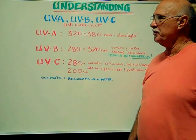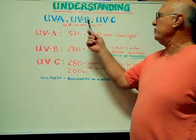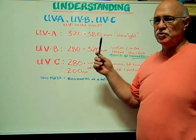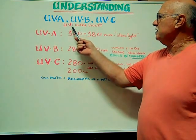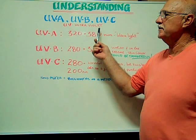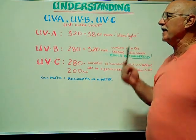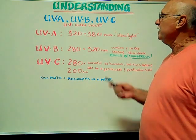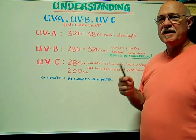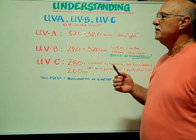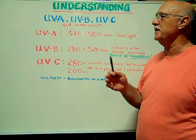Here at Bulbtown, we want to help you understand and identify UVA, UVB, and UVC as they pertain to lighting. UV stands for ultraviolet. Ultraviolet radiation is part of the electromagnetic light spectrum that reaches the earth from the sun. It has a wavelength that's shorter than visible light, which makes it invisible to the naked eye.